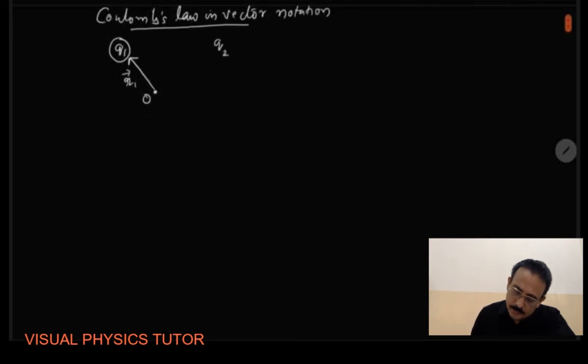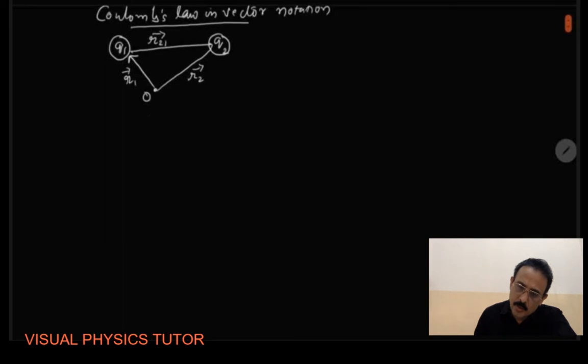Similarly, again from that arbitrary origin O, let us consider another charge Q2. Now let this Q2 be at a position vector R2 vector. Now we can check that R21 vector is the vector leading from charge Q1 to Q2. So let R1 vector and R2 vector be the position vectors of Q1 and Q2 respectively from the arbitrary origin O, and R21 vector is the vector leading from charge Q1 to Q2.